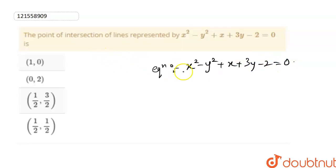Now you will know what to do here. This represents a pair of straight lines. And if I put this in factored form, my factors are going to be (x minus y plus 1) into (x plus y minus 2) is equal to 0.